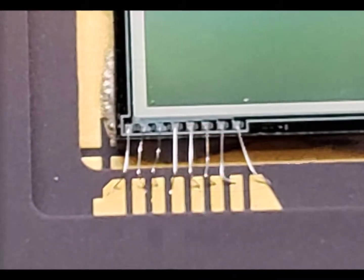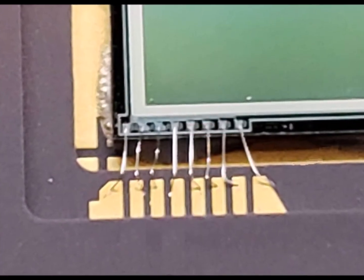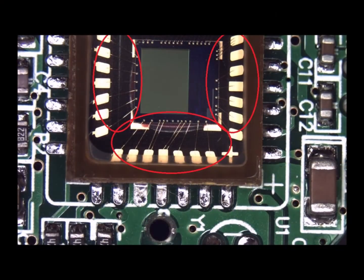Be aware some scientific grade sensors have exposed bond wires which are extremely fragile. Do not get polymer around the wires as they can be damaged when the dry polymer is peeled.